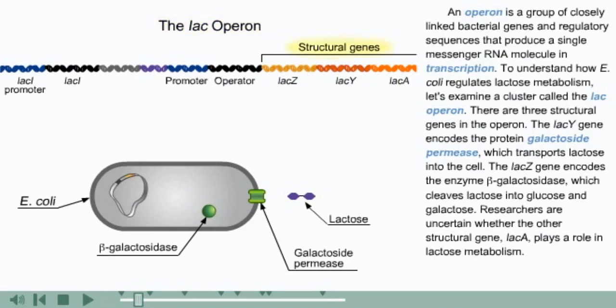There are three structural genes in the operon. The lacY gene encodes the protein galactoside permease, which transports lactose into the cell. The lacZ gene encodes the enzyme beta-galactosidase, which cleaves lactose into glucose and galactose. Researchers are uncertain whether the other structural gene, lacA, plays a role in lactose metabolism.